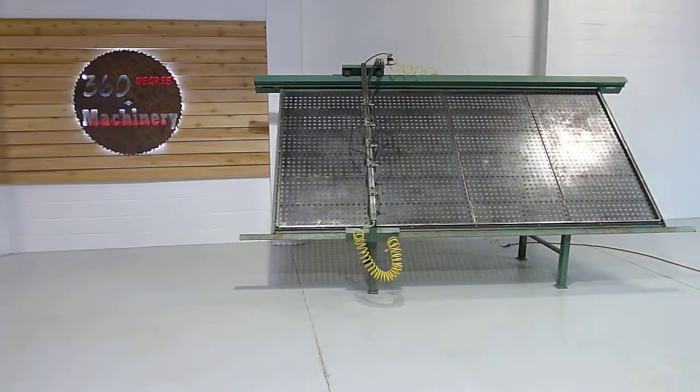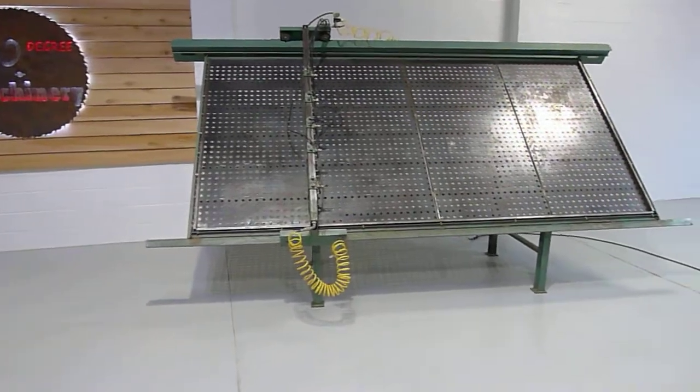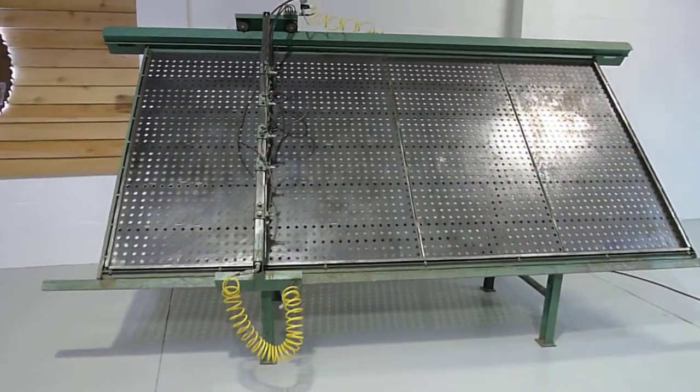Welcome to 360 Degree Machinery. We're going to do a walkthrough of a Ritter R250 assembly table. This particular model has a 5x12 capacity.